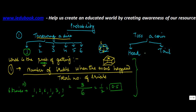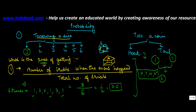Similarly, if someone were to ask you what's the probability of getting a head — a coin can have either head or tail, so there could be two possible outcomes. Let's say you tossed the coin and got: head, tail, head, head. The probability of getting a head is the number of trials when the event happened — how many times did you get head? Three — divided by total number of trials, which is four. So three upon four, or 0.75.